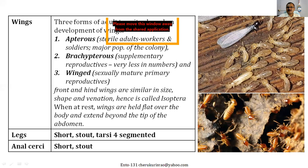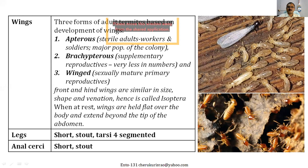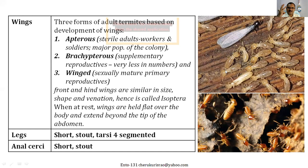As far as winged adults are concerned, there are two pairs of wings — forewings and hindwings — and they are similar in size, similar in venation, similar in everything. That is why these insects come under Isoptera: 'iso' means similar. The legs are short and stout, tarsi are four-segmented. These are the important taxonomic characters of termites belonging to order Isoptera.